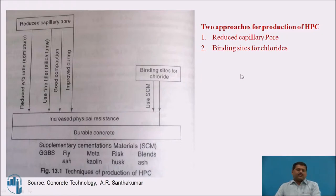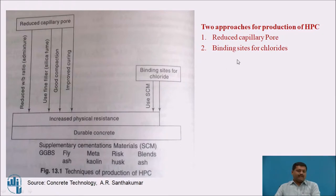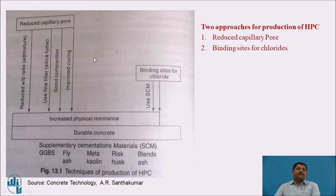This schematic diagram explains the approaches for production of HPC. The basic requirements are high workability, high strength, and high density, but most importantly high durability — durability is the key parameter in HPC. There are two main approaches: first, reducing the capillary pores; and second, binding the sites to prevent the transportation of chloride ions. Capillary pores are the sources through which the durability of concrete may be affected.